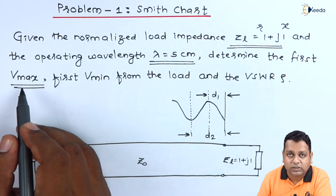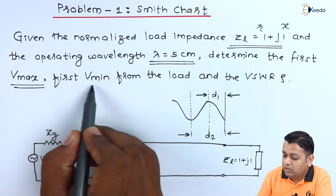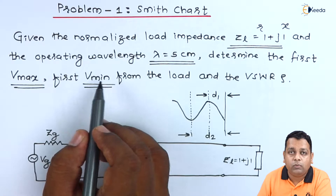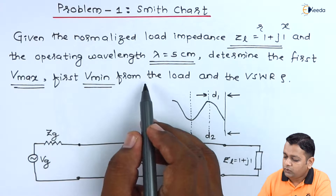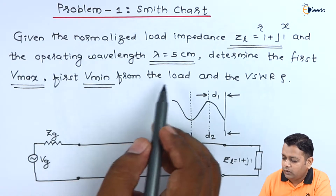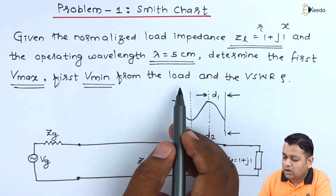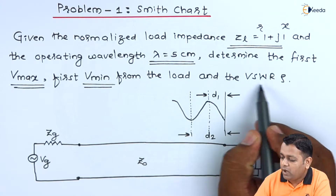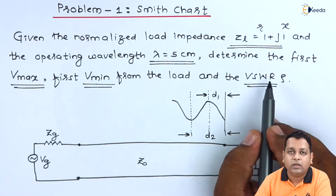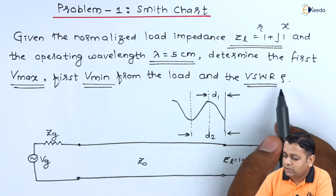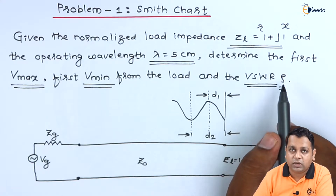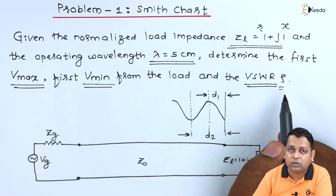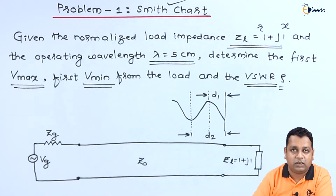The first Vmax will obviously be on the right-hand side. We are also asked to determine the first Vmin, which will be on the opposite — that is, the left-hand side of the Smith chart. The Vmin, Vmax, and VSWR are all to be determined. The standing wave ratio, denoted by rho, is also to be calculated with the help of the Smith chart.